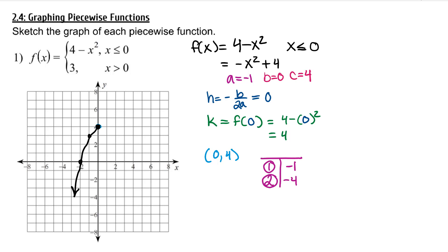This piecewise function is made up of a second piece. When the x's are greater than 0, the y values are 3. That's a horizontal line at y equals 3.